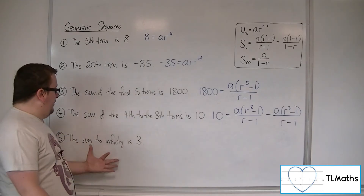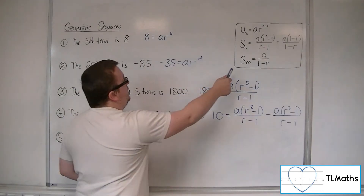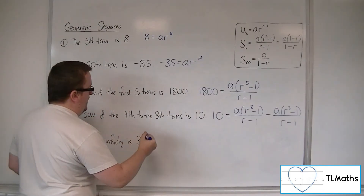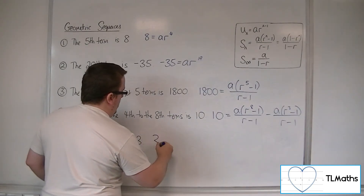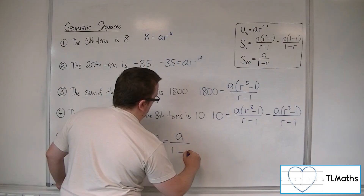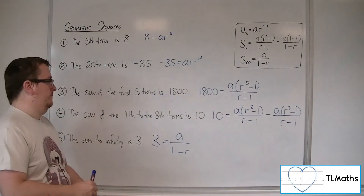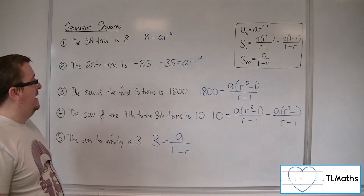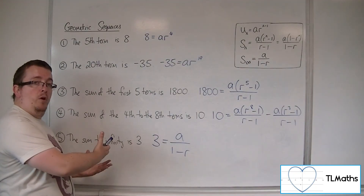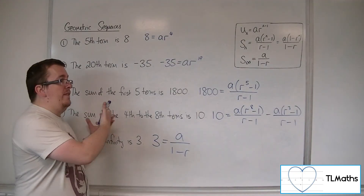And then finally, if the sum to infinity is 3, then using the final formula, that means 3 must be equal to a over 1 minus r.